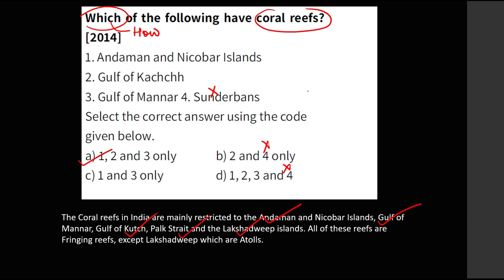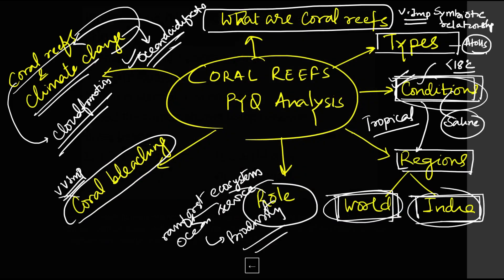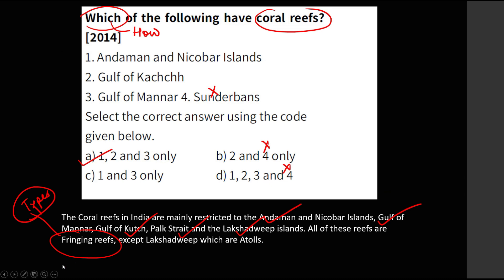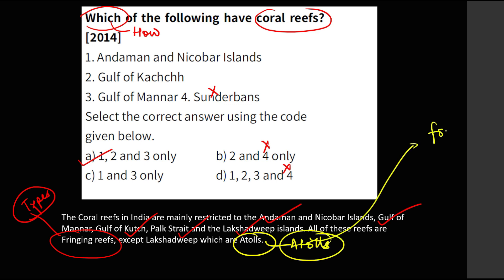One important thing to keep in mind is that all coral reefs found in other places are fringing coral reefs. Types of coral reefs is very important — that is why I said you need to prepare types of coral reefs. Whereas in Lakshadweep, which is very important this year, you get atolls. Atolls are very important; you need to prepare the concept of atolls and how atoll formation takes place.